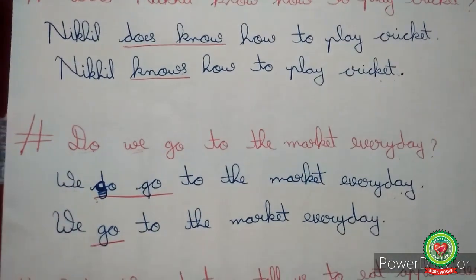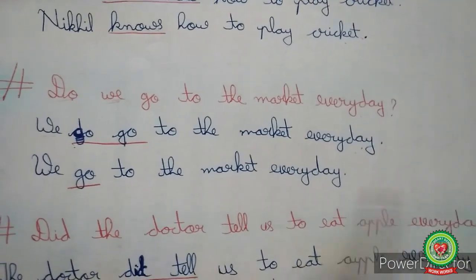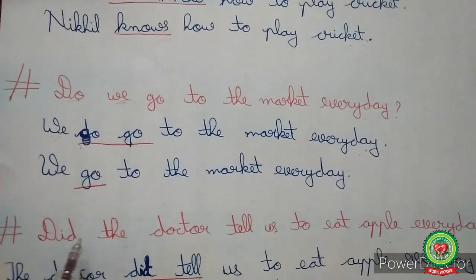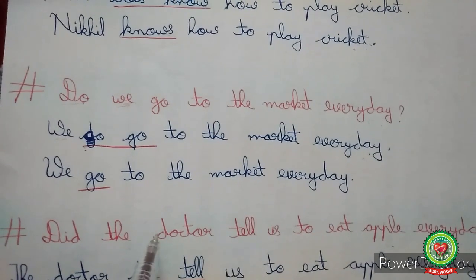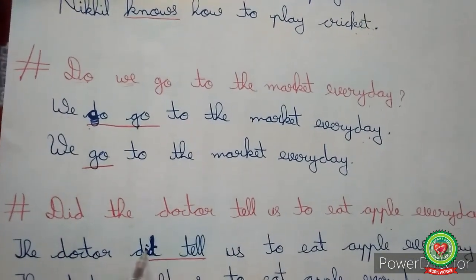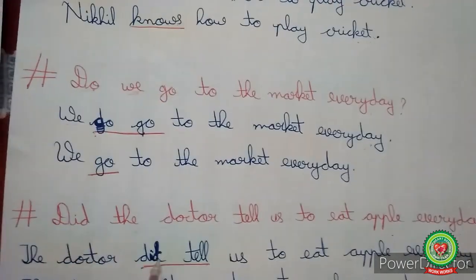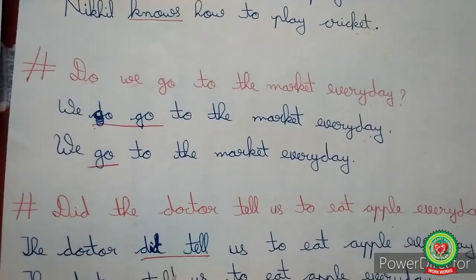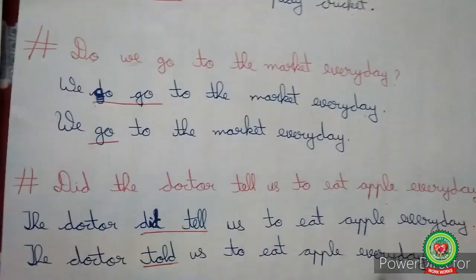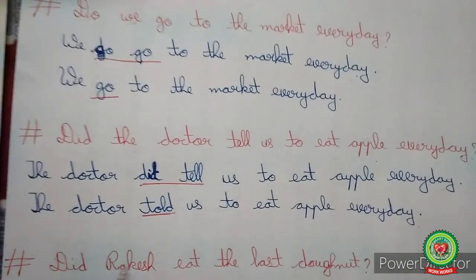See the third example: 'Did the doctor tell us to eat apple every day?' Here 'did' is the helping verb. We place 'did' after the subject 'the doctor,' giving 'the doctor did tell us to eat apple every day.' Now 'did tell' must be changed to 'told,' so the statement becomes: 'The doctor told us to eat apple every day,' with the question mark replaced by a full stop.